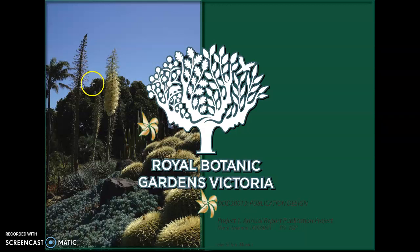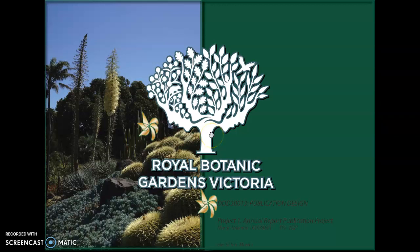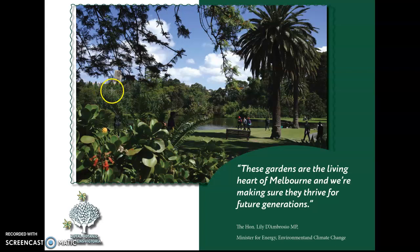This is my annual report publication project idea about the Royal Botanical Garden Victoria, which follows the traditional look of placing photographs on the first page. To make it more interesting, I enlarged the Royal Botanical Garden Victoria logo and placed a half green background, which will show the Royal Botanical Garden Victoria logo prominently.